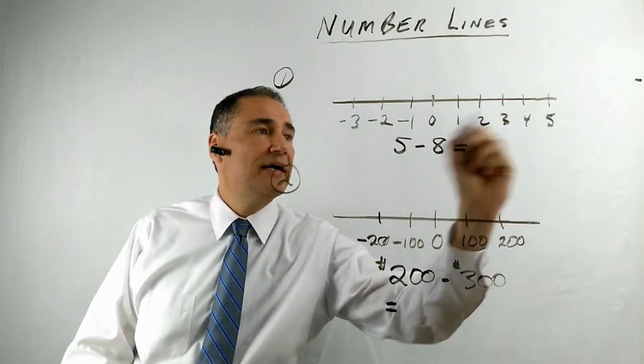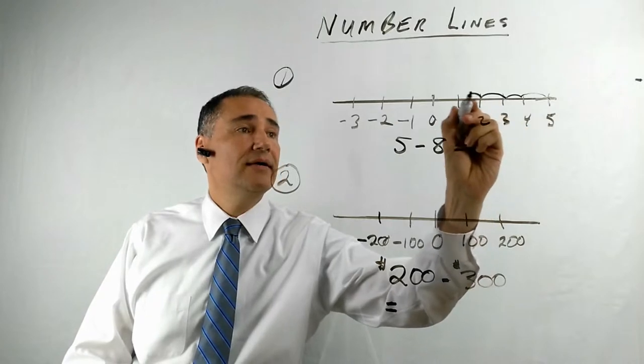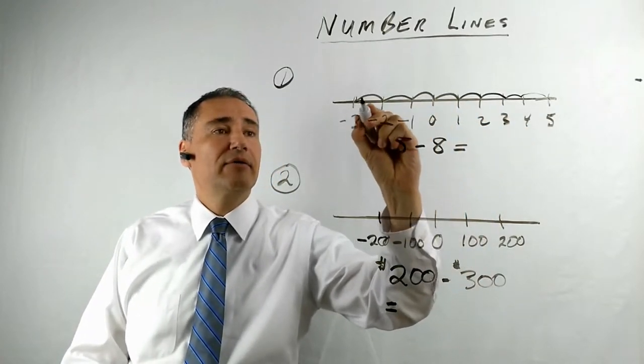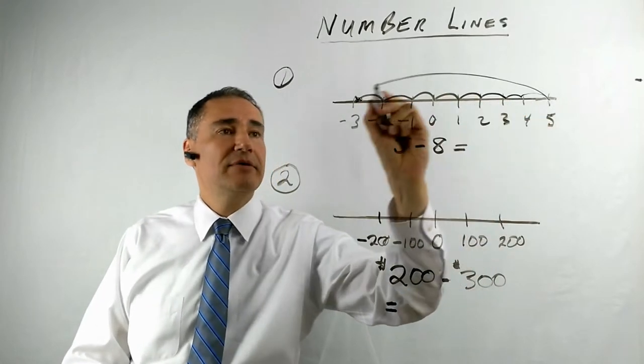Five minus eight. Five, one, two, three, four, five, six, seven, eight. We draw eight little semicircles. Then we draw one big semicircle.